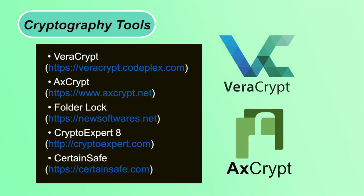Cryptography tools include VeraCrypt, XCrypt, Folder Lock, Crypto Expert 8, and CertainSafe, in which various encryption algorithms like DES, 3DES, RSA, and AES have already been implemented for encryption and decryption. You can simply use these tools after installing them — there is no need to implement encryption algorithms yourself. All these software are open source and freely available on the internet; links for downloading are given in the slide.